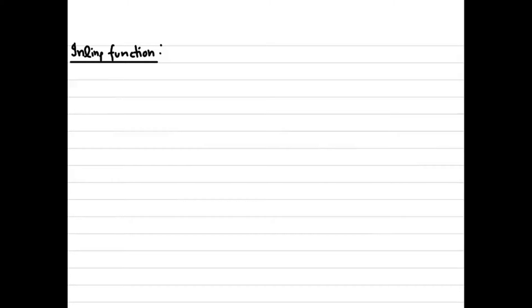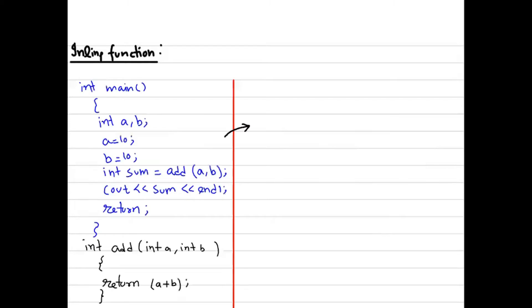Before the discussion, let me take an example so we can understand the need for using an inline function — what was the basic need for this. This is a simple code we've been using: two variables with values 10 and 10, and we call an add function that returns their sum. The program counter is responsible for reading and executing each line.